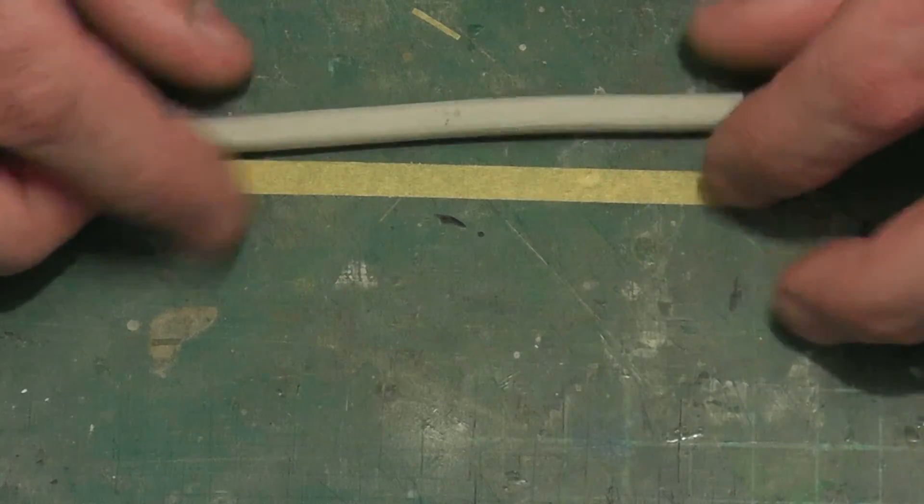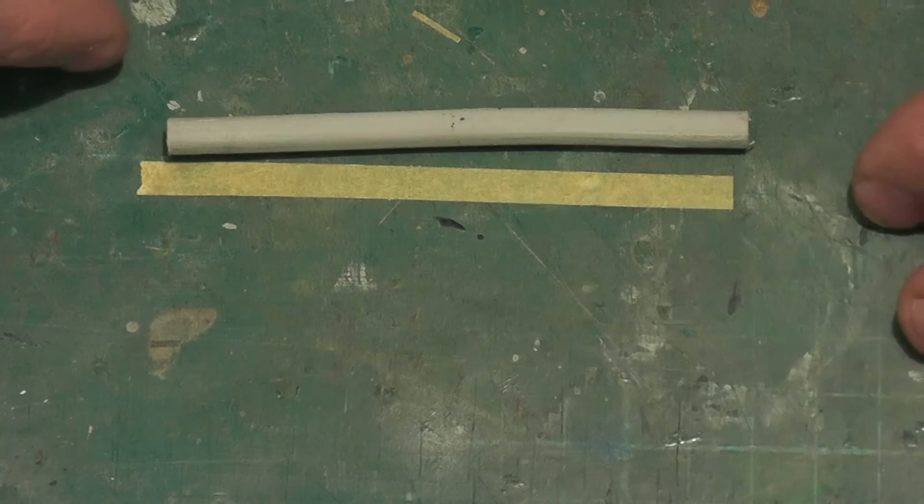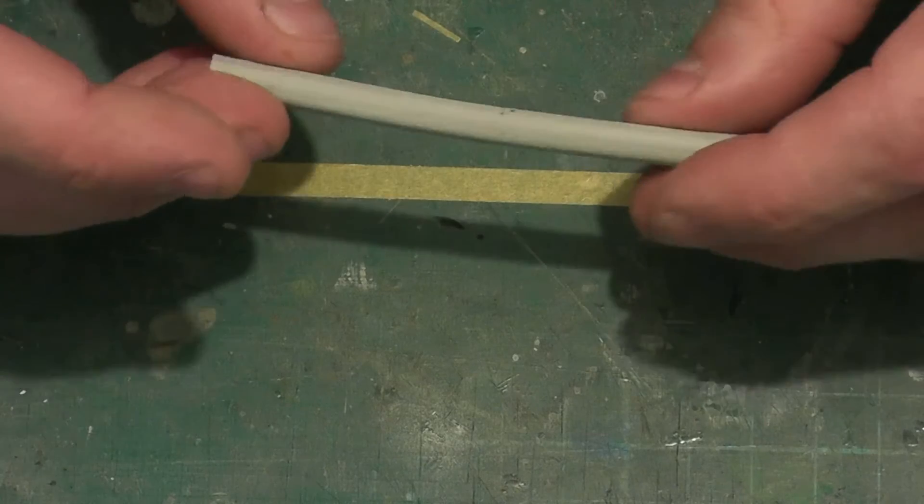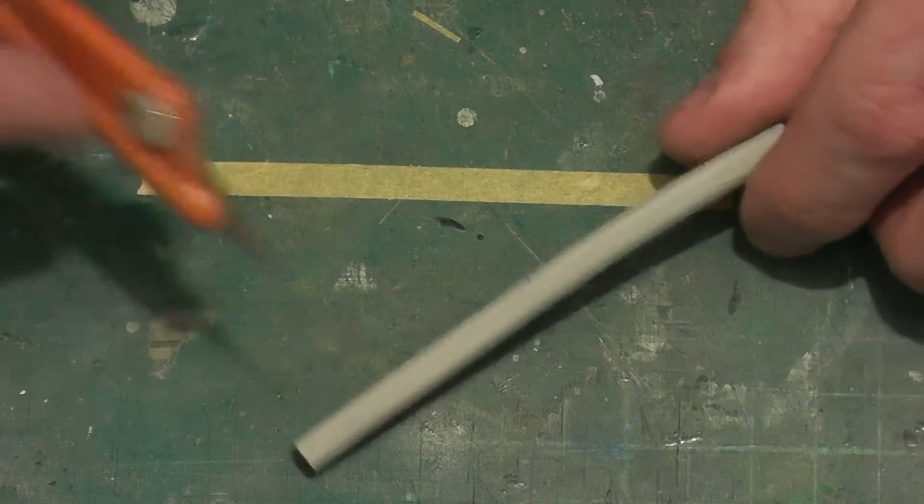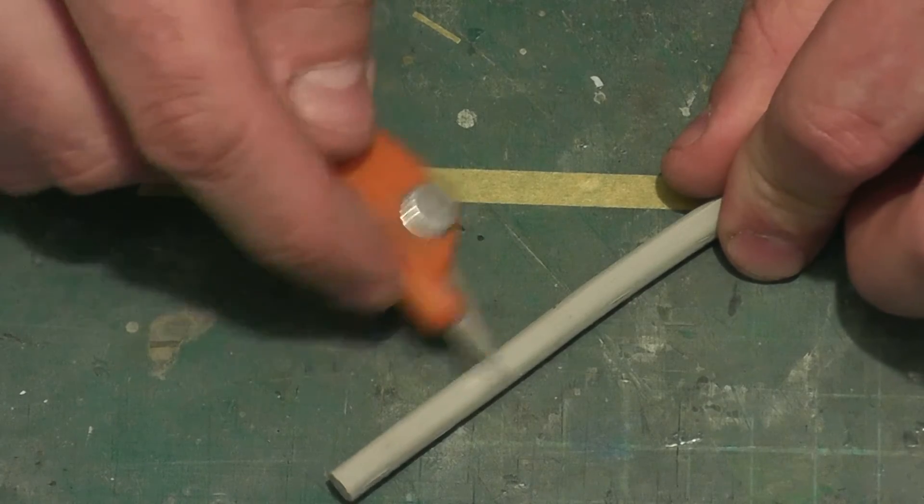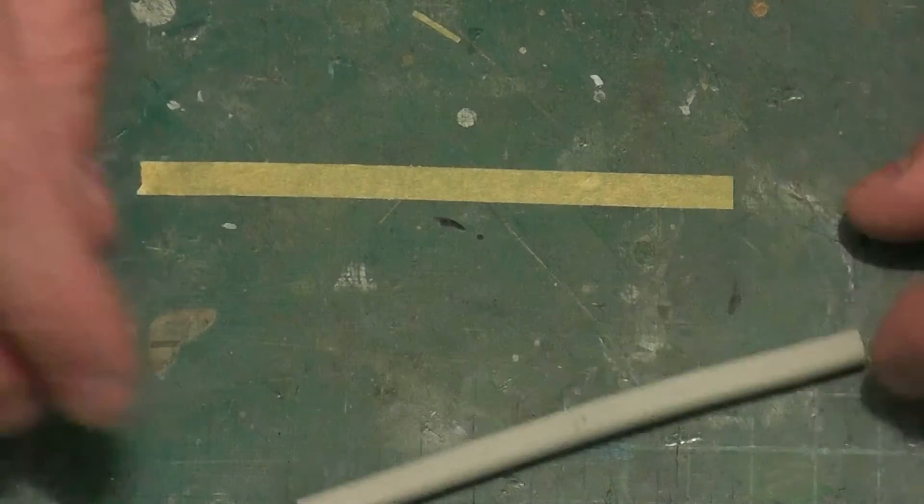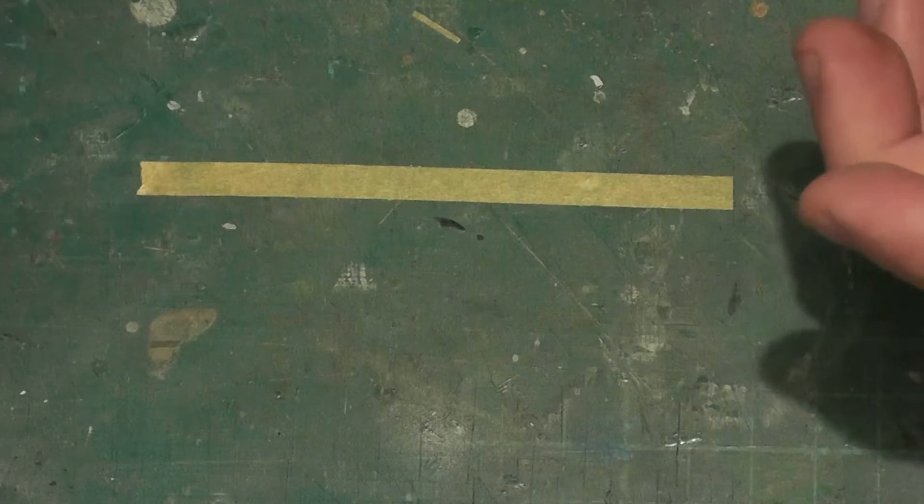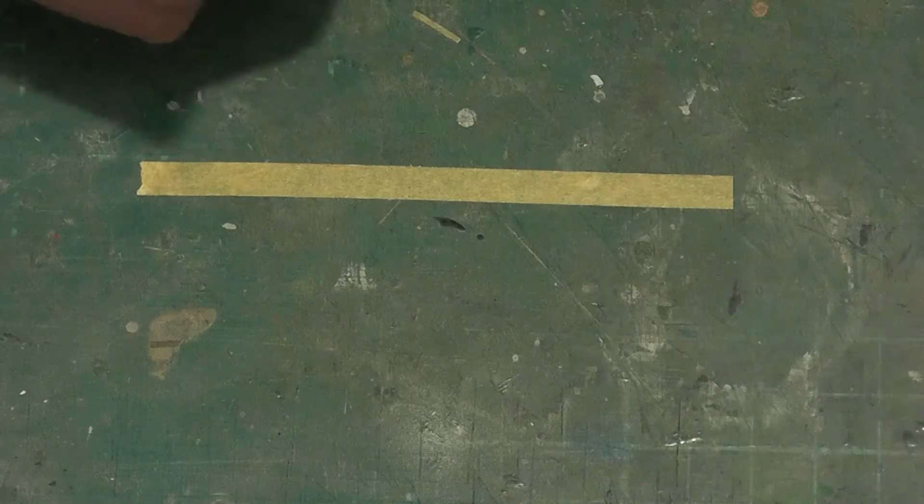It comes on a sprue of vinyl-y rubber material and is, frankly, pretty awful as a portrayal of an unditching log. It's difficult to sand and to remove seam lines, which are huge. It's really difficult to clean up, really flexible. Overall, it's pretty awful, and I wanted something that's going to look reasonably like a log on the rear of the vehicle.